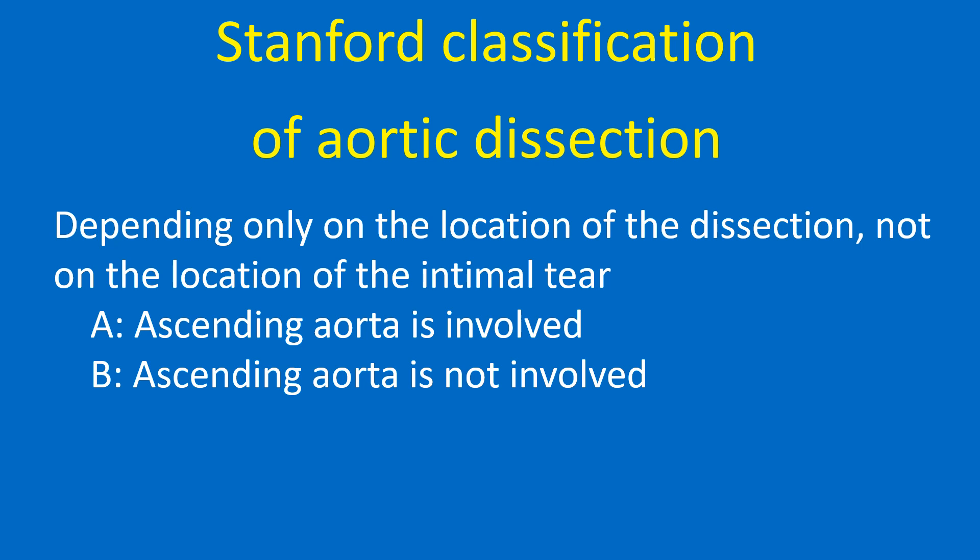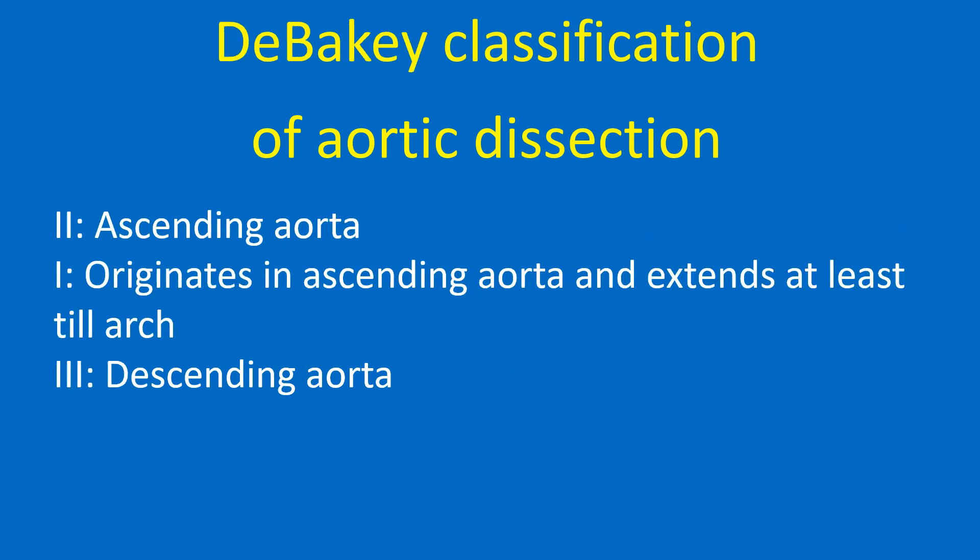Stanford classification of aortic dissection depends only on the location of the dissection, not on the location of the intimal tear. Type A involves the ascending aorta; type B does not. DeBakey classification type 1 originates in the ascending aorta and extends at least to the arch.